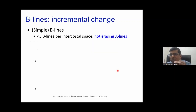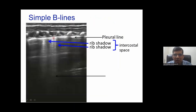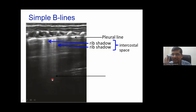Now let's look at the various patterns of B-lines. Simple B-lines: you can see the pleural line, the vertical B-lines, and rib shadows in the intercostal space. These B-lines below the pleural line are separate — you can differentiate one, two, three individually. They are not compact or merged together. Simple B-lines indicate minimal fluid in the interstitial space.